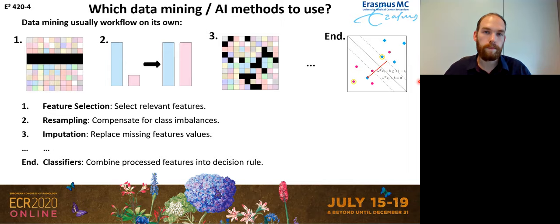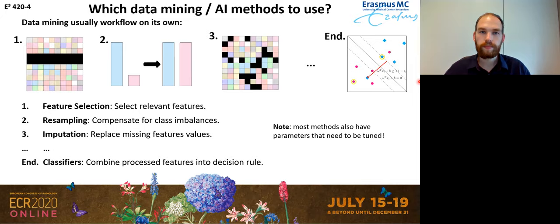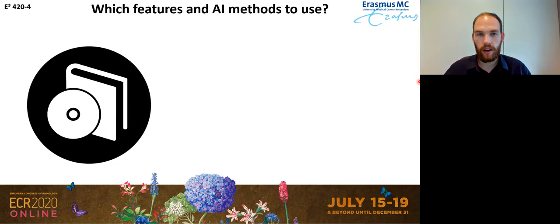There are many different components you can use, and in each component — for example, in feature selection — there are a lot of methods available. Another important note is that most of these methods also have parameters which you can choose. So what we end up with is having to pick features and AI methods to use in our radiomics signature. Which methods do we pick? That's quite complicated.